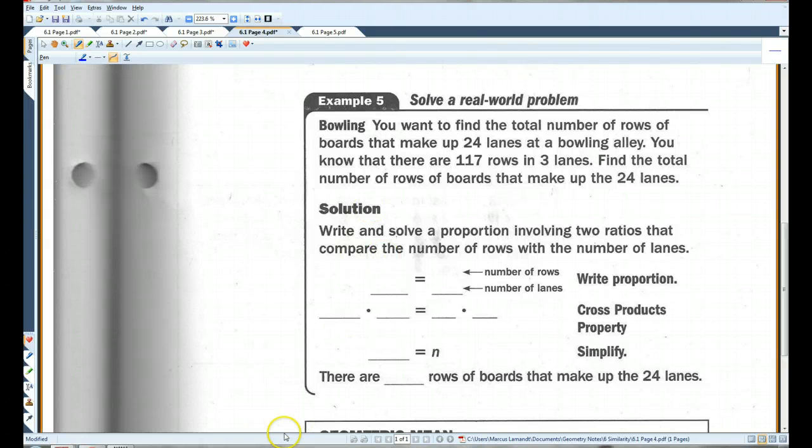Example 5. You want to find the total number of rows of boards that make up 24 lanes at a bowling alley. You know there are 117 rows in 3 lanes. Find the total number of rows of boards that make up the 24 lanes. We're going to write and solve a proportion involving two ratios. So we know there are 117 rows in 3 lanes. We want to know how many rows make up 24 lanes because they have to be the same ratio.